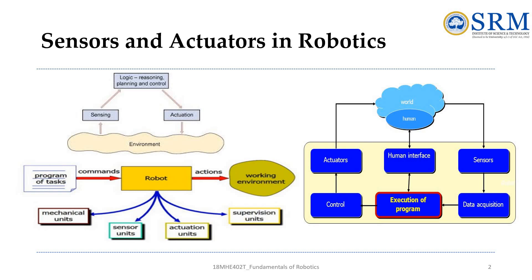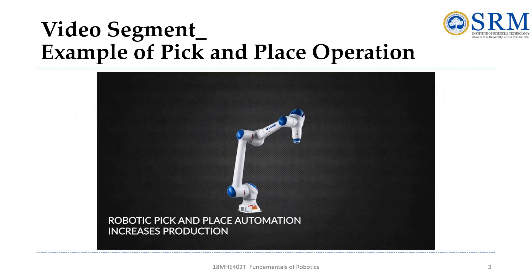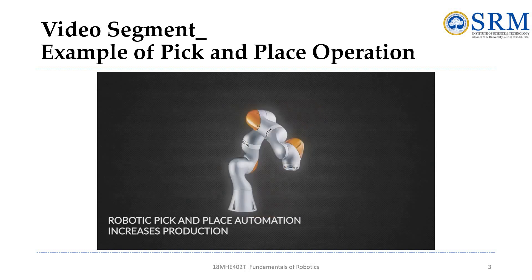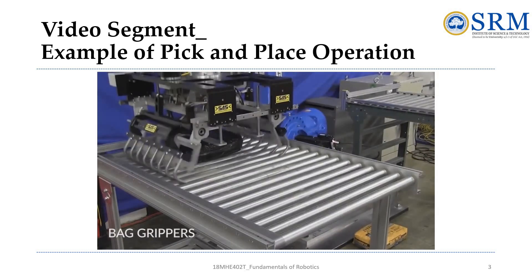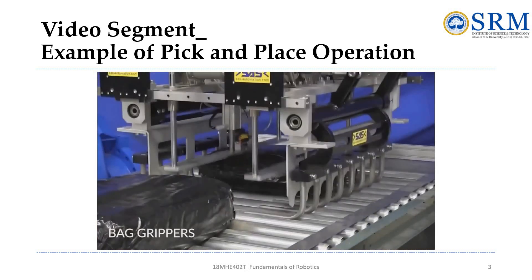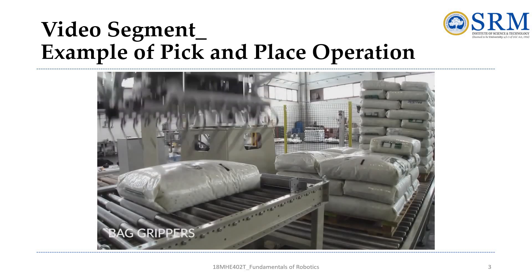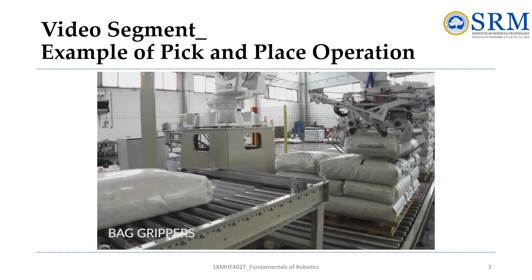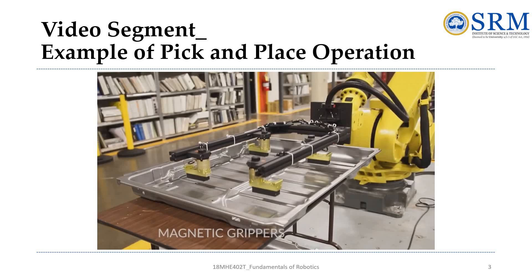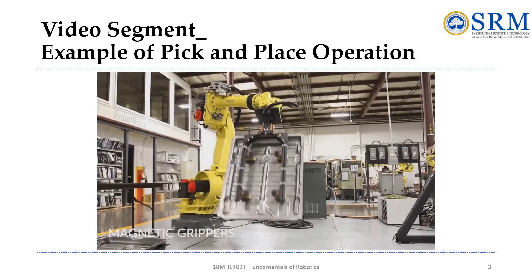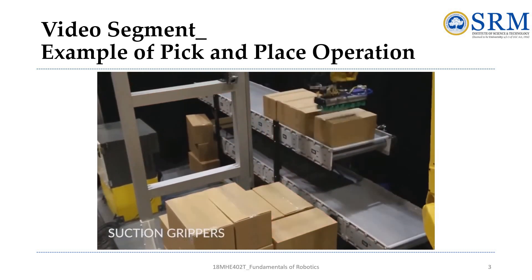Next is a video segment showing an example of a pick-and-place operation. Pick-and-place robots utilize a variety of grippers to manipulate materials. Bag grippers have adjustable fingers to move bags of any size and are best suited for soft parts such as soil, sand, and absorbent material. Magnetic grippers can handle steel products and heavier payloads.